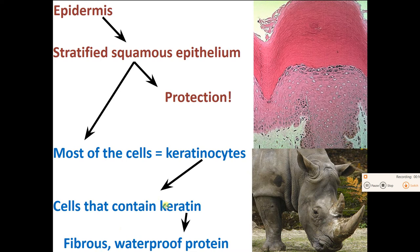Keratin is also found in your hair and your nails. The rhinoceros horn is made out of keratin — the same stuff as in fingernails, and the same stuff in those apical cells at the top of the epidermis.